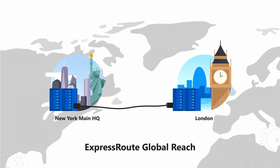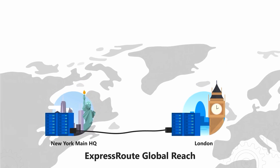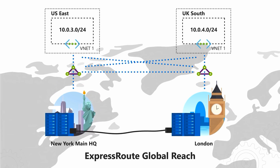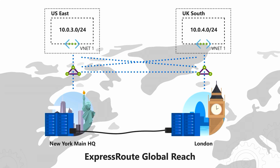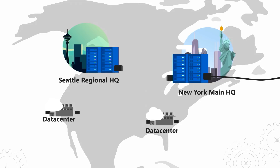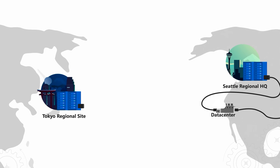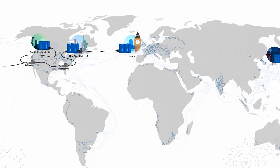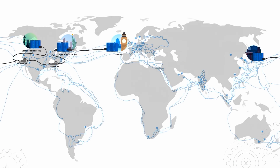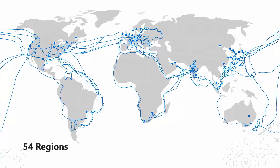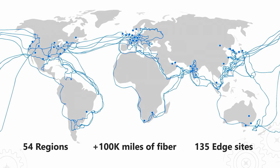ExpressRoute Global Reach allows you to link your ExpressRoute circuits together to make a private network between your on-premises sites. This is particularly useful if you need to use different providers. For example, you may have linked all your main sites in the US, but your service provider doesn't operate in a few countries within Asia. With ExpressRoute Global Reach, you can work with an alternative ExpressRoute provider, and Microsoft will connect your branches there to the ones in the US using our global network, which spans 54 regions, more than 100,000 miles of fiber, and over 135 edge sites.